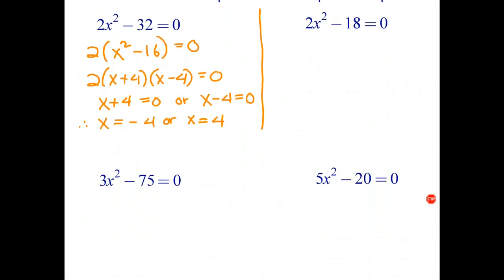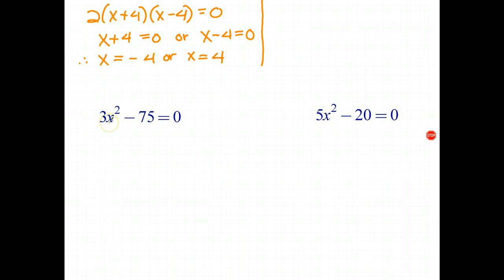And I'll go and do the one down here. 3x squared takes 75 equals 0. So again, we always look for a common factor first. The common factor in this case is 3. So we factorize out the 3. x squared take 25 equals 0. And that's now a difference of two squares. a is equal to x, b is equal to 5. So we can factorize that into the form x plus b, x take b equals 0.